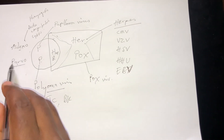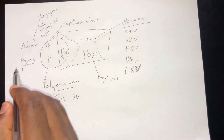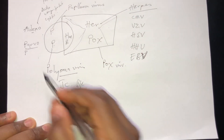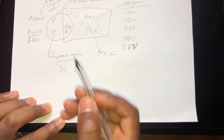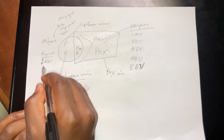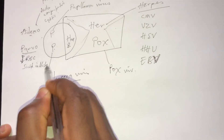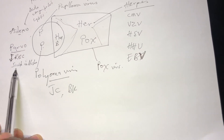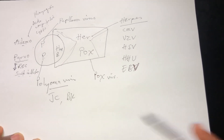Parvovirus B19 loves to infect pro-erythroblasts — the erythroblast colony-forming cells. So that would cause a decrease in RBCs in the bone marrow. Another thing is it loves to infect patients who have sickle cell disease. So if a patient has sickle cell and has a viral infection, it's most likely going to be Parvovirus B19. There are other characteristics, but these are the basic ones.